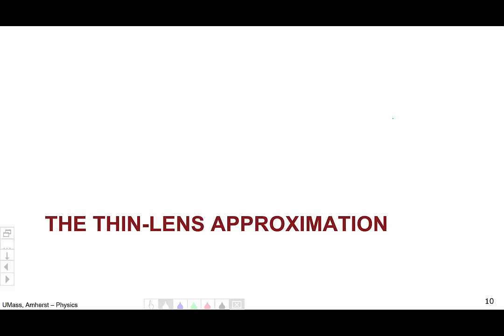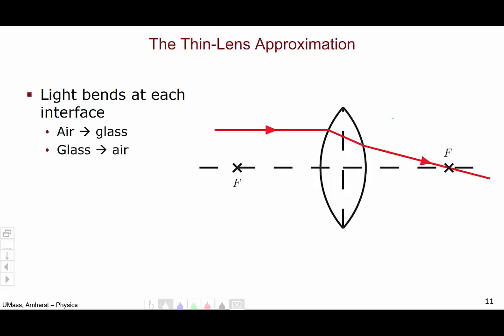Finally, let's move on to the thin lens approximation. In a real lens, light will bend at each surface. So, the light will bend as it goes from the air to whatever material, say glass, the lens is made of. And then it will bend again, by Snell's law, when the light moves from the glass back into the air.